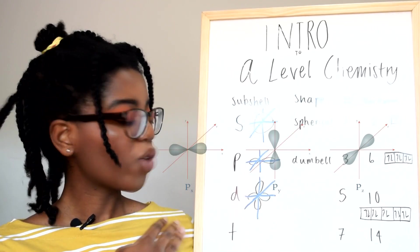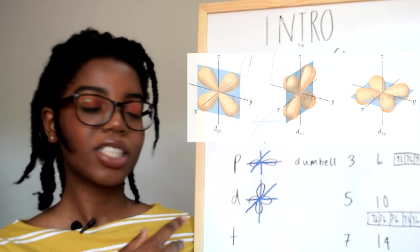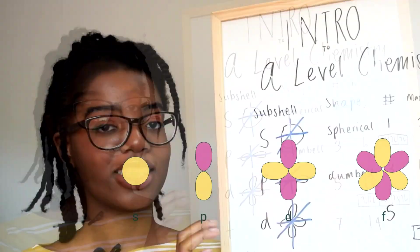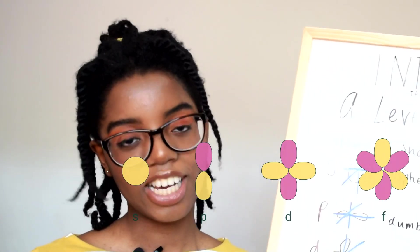With D there's actually two P orbitals, and with F it gets really complicated and you can do that in a chemistry degree if you're really interested.